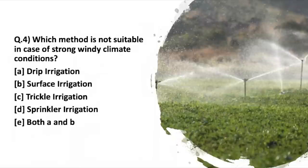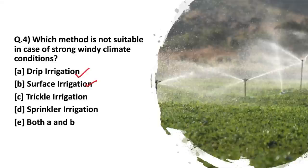Moving to the next question: which method is not suitable in case of strong windy climate conditions? Drip irrigation delivers droplets near the roots, so it is not affected by strong wind and is suitable. Surface irrigation floods the surface, so wind does not affect it — it is also suitable. Trickle irrigation is another name for drip irrigation, so it is also suitable.